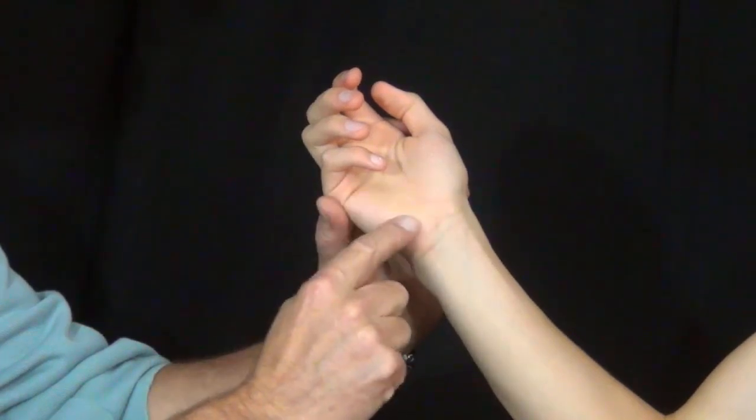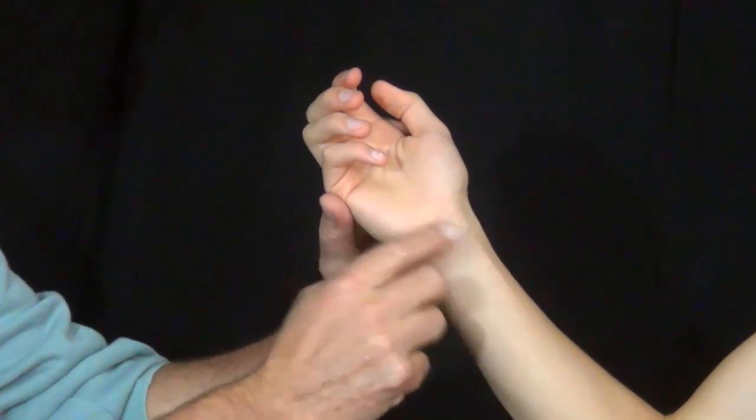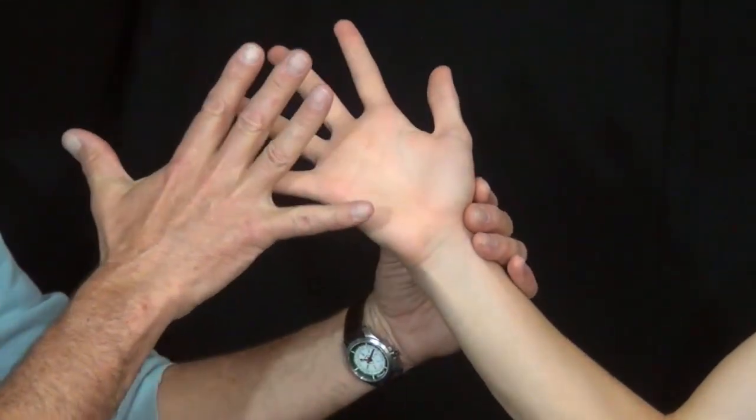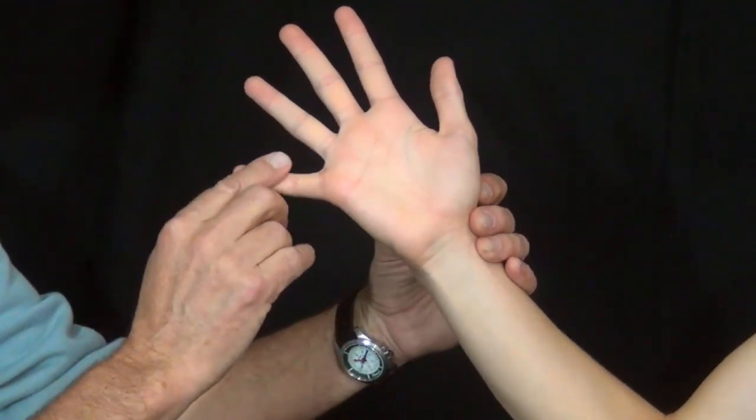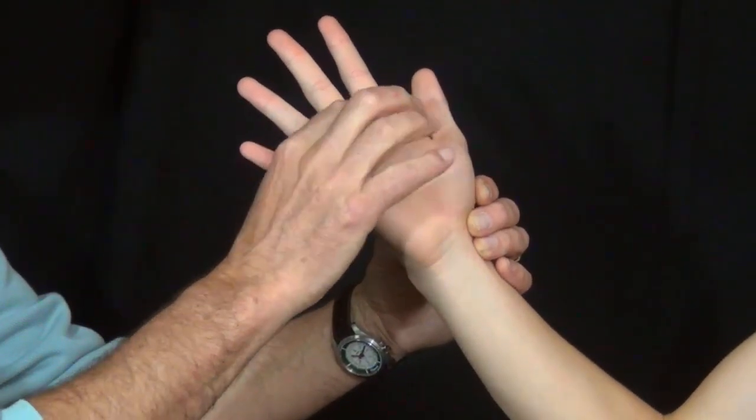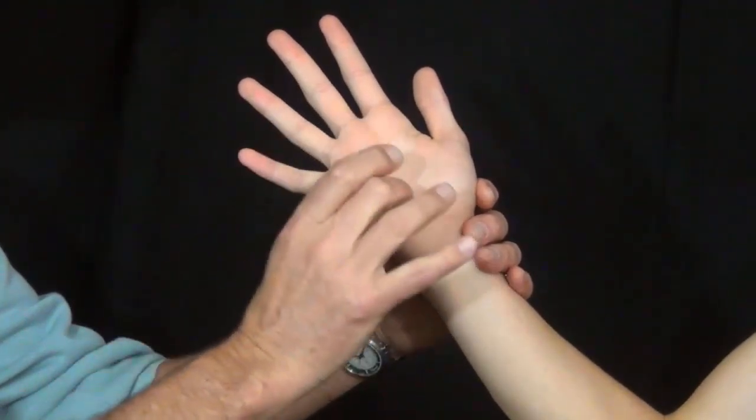It has normal prominence, the hypothenar eminence, the thenar eminence. And as you extend the fingers, which Levi is doing, we'll notice that there are palpable soft spots in between the fingers themselves.